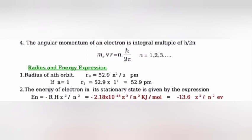Radius and energy expression: Radius of nth orbit r_n equals 52.9 n² / Z pm. The energy of electron in its stationary state is given by the expression En equals minus 2.18 x 10 raised to minus 18 times Z² / n² Joules per mol equals minus 13.6 Z² / n² eV.